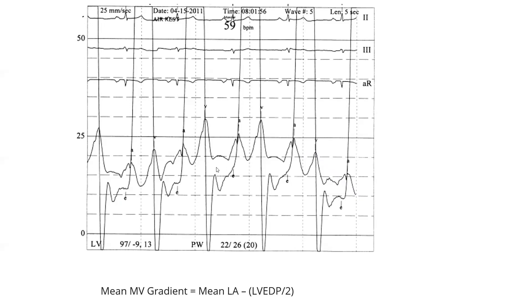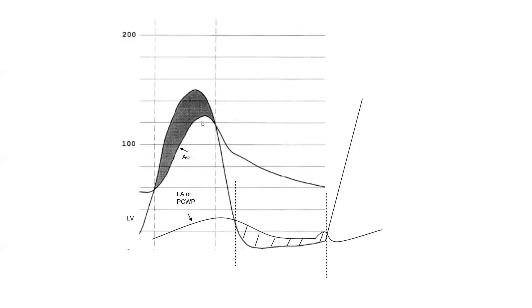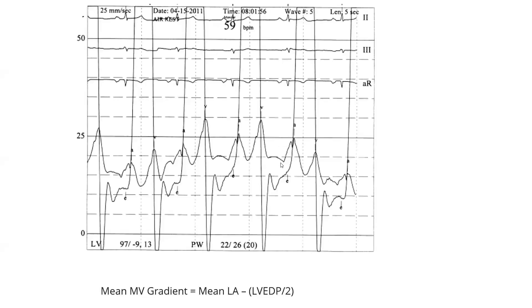Another finding is a mean gradient greater than 5 mmHg despite a heart rate less than 80 bpm. Unlike aortic stenosis where peak-to-peak gradient is easy to read on the spot, mitral stenosis gradient is harder to obtain quickly. I sometimes take the highest point in the middle area as a rough mean gradient on the spot. The best method is post-processing — measuring the area under the curve between the two pressure curves, whose integral is the mean gradient.